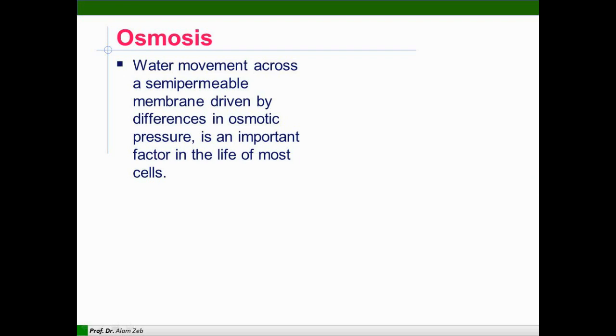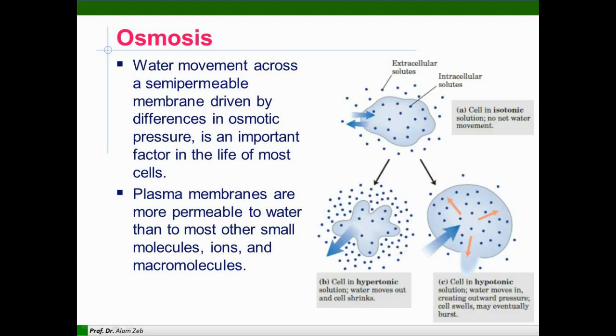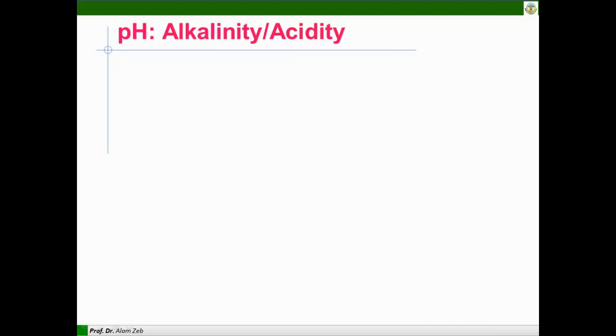Next property is osmosis. Water movement across a semi-permeable membrane is driven by differences in osmotic pressure. This is an important factor in the life of most cells. Plasma membranes are more permeable to water than most other small molecules and macromolecules. When a cell is present in an isotonic solution, water does not move. A cell in a hypertonic solution, water moves out of the cell and the cell shrinks. When a cell is placed in a hypotonic solution, water moves in creating outward pressure. The cell swells and may eventually burst.